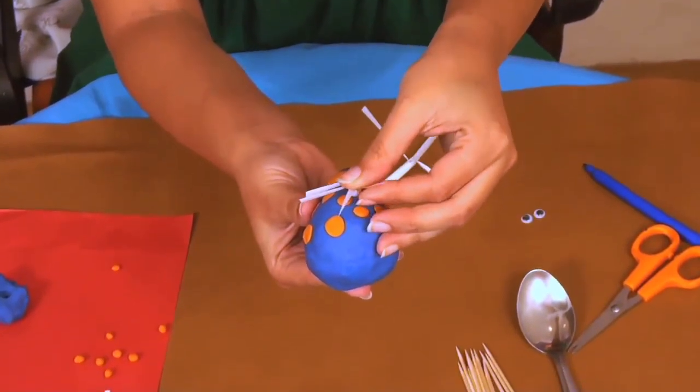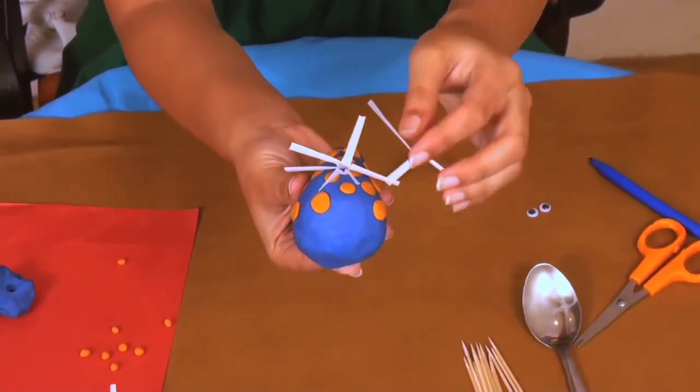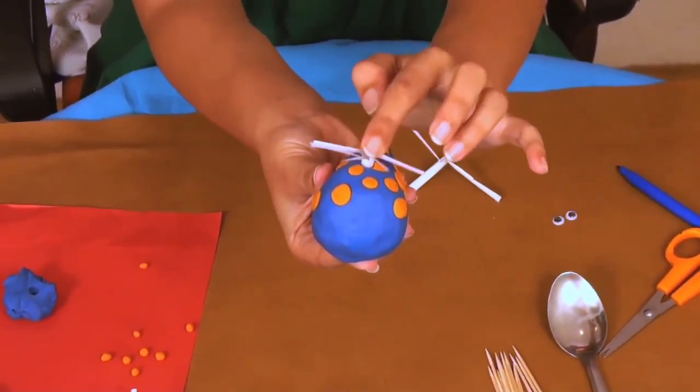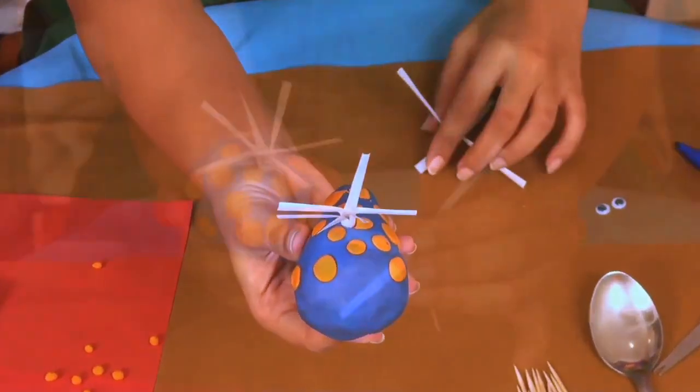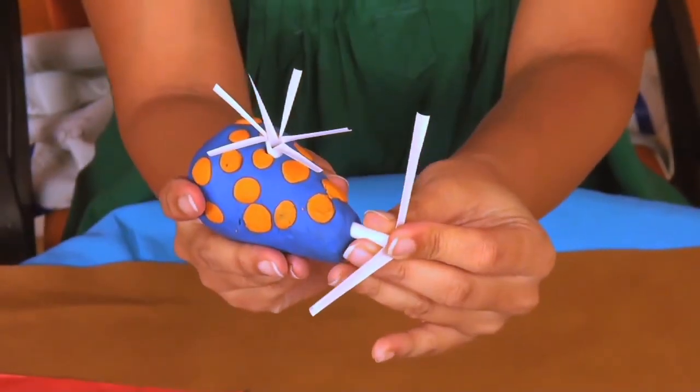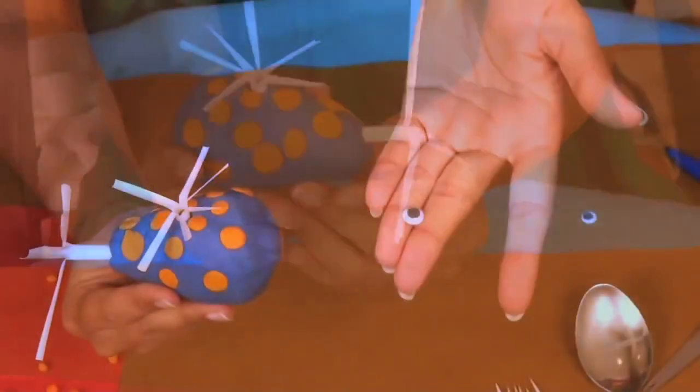Now take the smaller split straw and place it on the head of the whale. Then take the three-strip straw and push it in the narrow end of the whale's body.